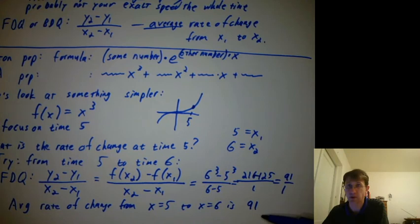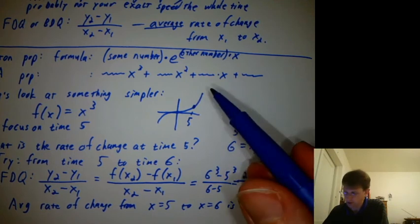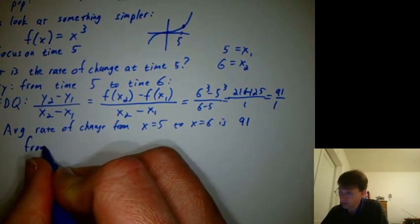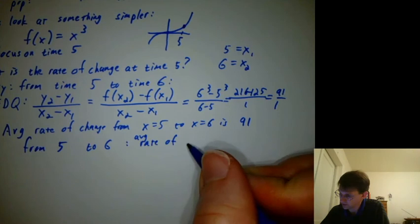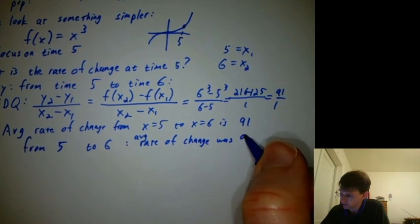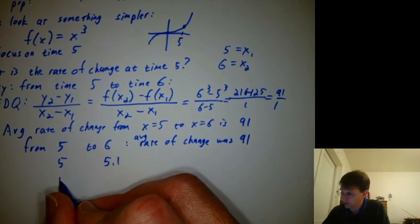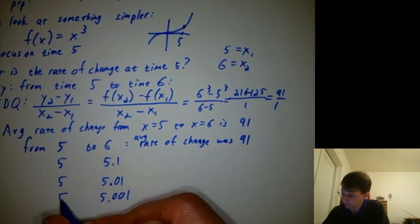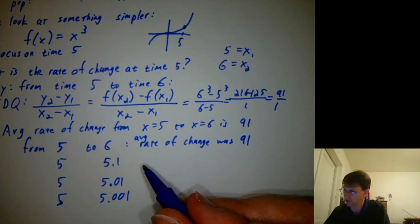If this was population, that would be 91 people per year. But if we wanted the rate of change right at time five, why go all the way to time six? Maybe we should try times closer to five — from five to 5.1, then five to 5.01, or five to 5.001, sneaking up on five. That's going to be a lot of arithmetic, and any time you're facing a lot of arithmetic, a good solution is to turn to a computer. We'll do that in our next video.